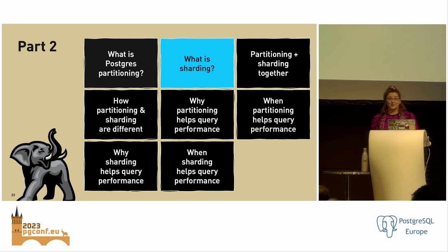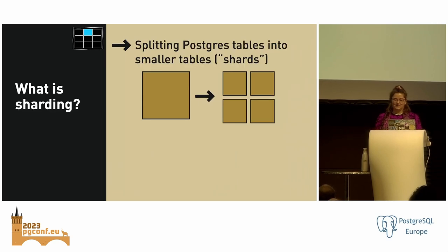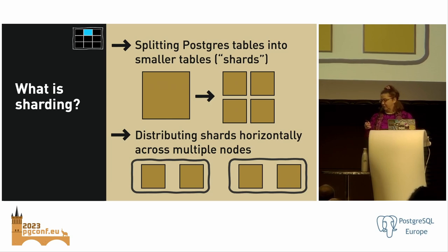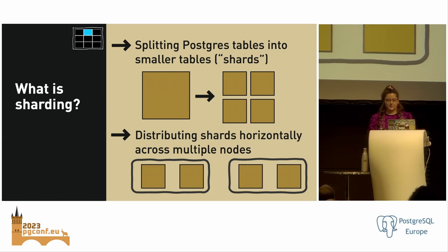Chapter two: What is sharding? It's similar in that you're splitting a big Postgres table into smaller tables, which we call shards. The difference is that with sharding, most people associate it with distributing Postgres — a multi-node distributed database cluster. You can take these shards and distribute them horizontally across multiple nodes.